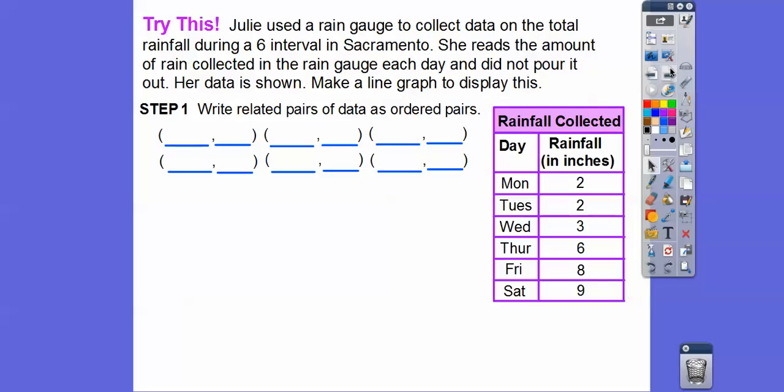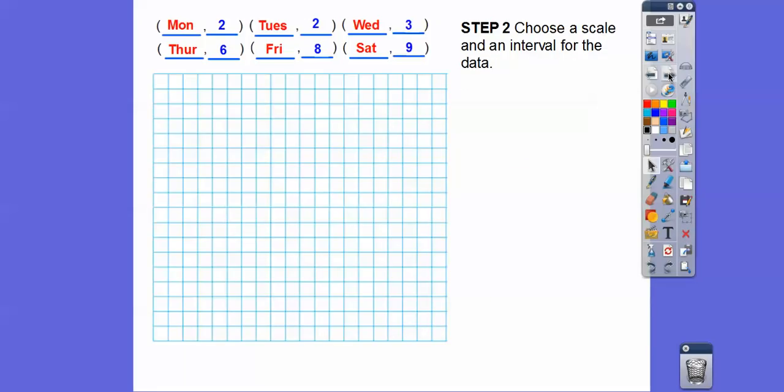So let's write related ordered pairs of the data. Let's write these pairs as ordered pairs. So this is going to be Monday, 2, Tuesday, 2, Wednesday, 3, Thursday, 6. That's what's going in all of these. So they don't have to be numbers. So there, we're going to put all those in the X numbers right there. And then put all those in the Y numbers right there. And then now we'll choose a scale and an interval for the data.